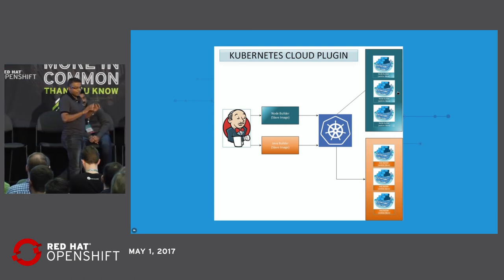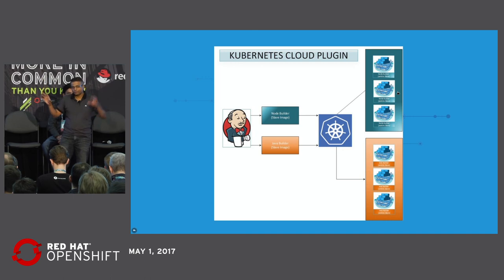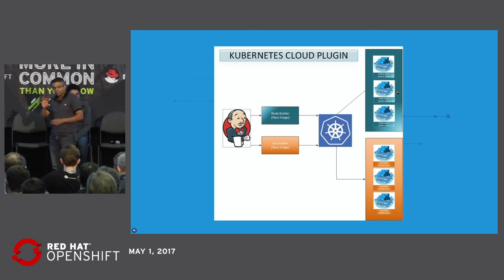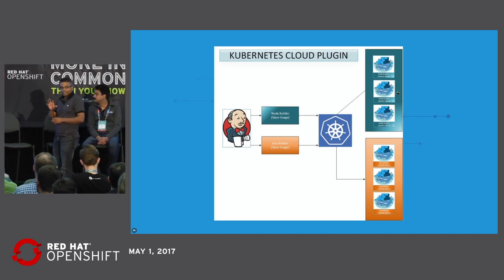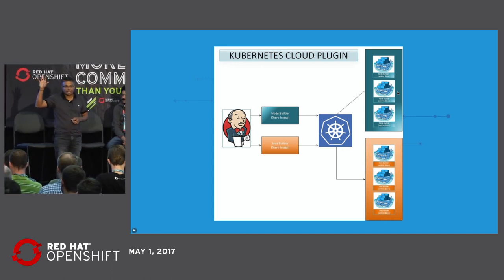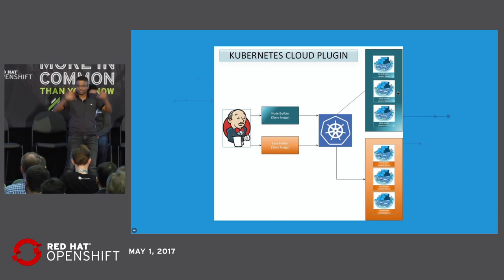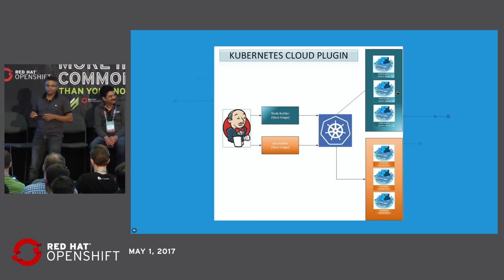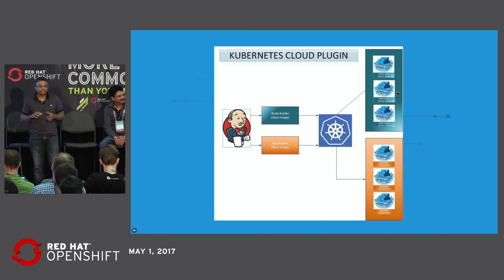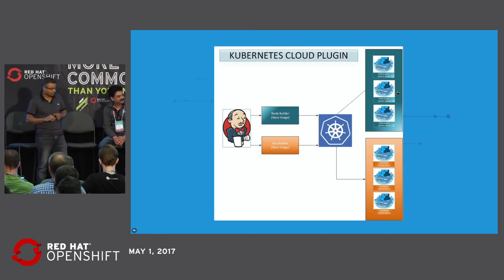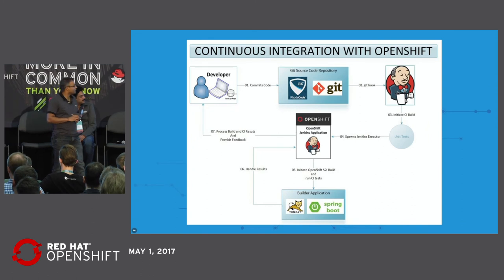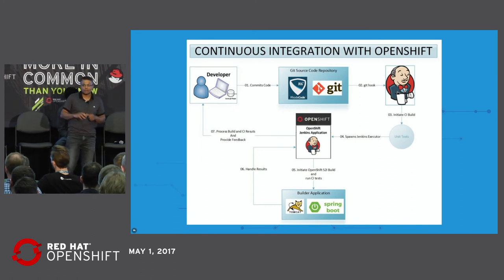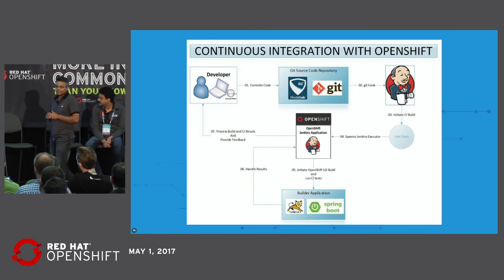Now that we had the whole setup in place — OpenShift, Jenkins, the Kubernetes cloud plugin, Nexus repositories, Git repositories, and everything else — our focus turned to continuous integration. For continuous integration, we made use of an OpenShift concept called Source to Image, or S2I. Source to Image, as the name implies, takes your application source and converts it into an executable Docker image which you can then deploy in OpenShift.